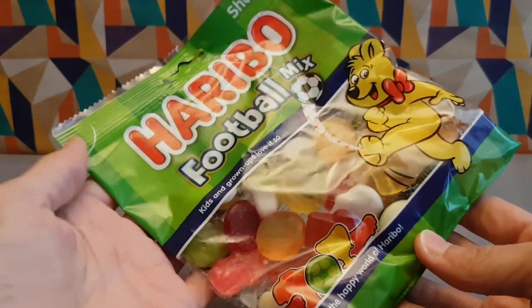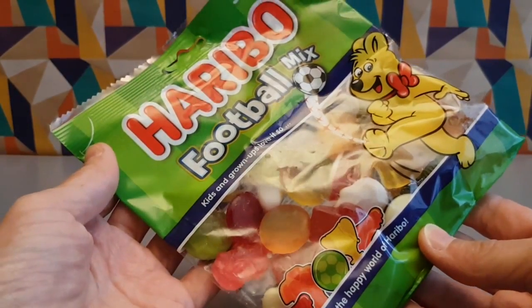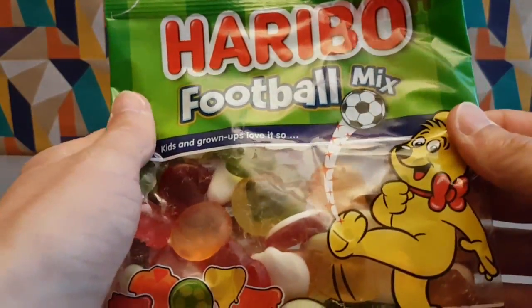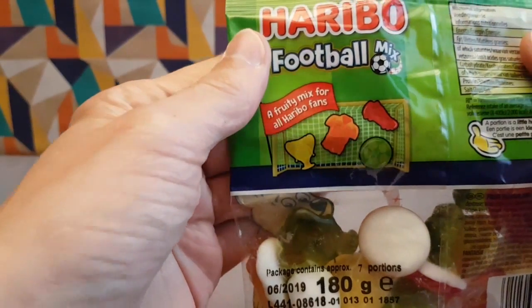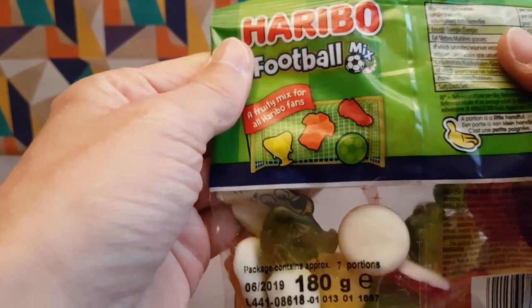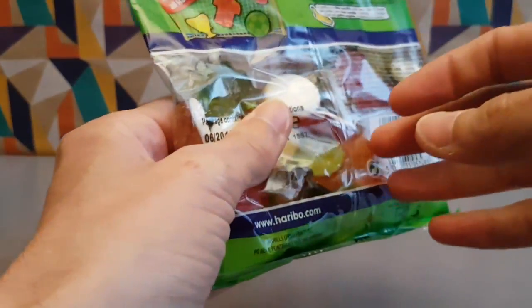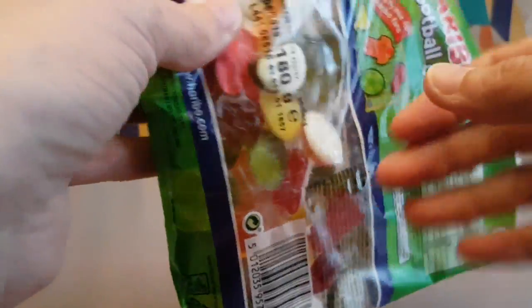They are football related gummies. As you can see, the Haribo bearer is kicking a football next to the word mix, just to give you an idea. They've got some shapes that you like. They've got some cups, some shirts, some boots and some balls. Who doesn't like a football boot to chew on?